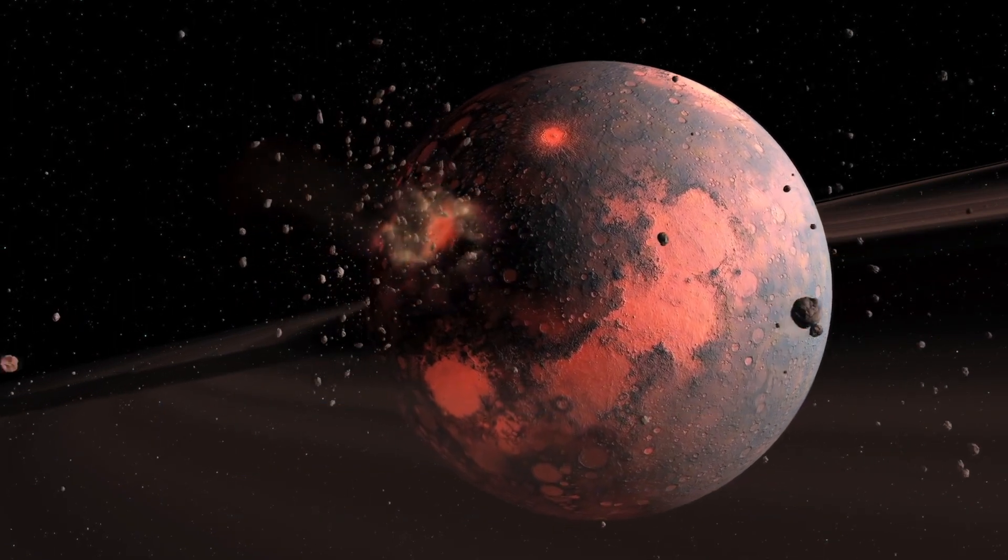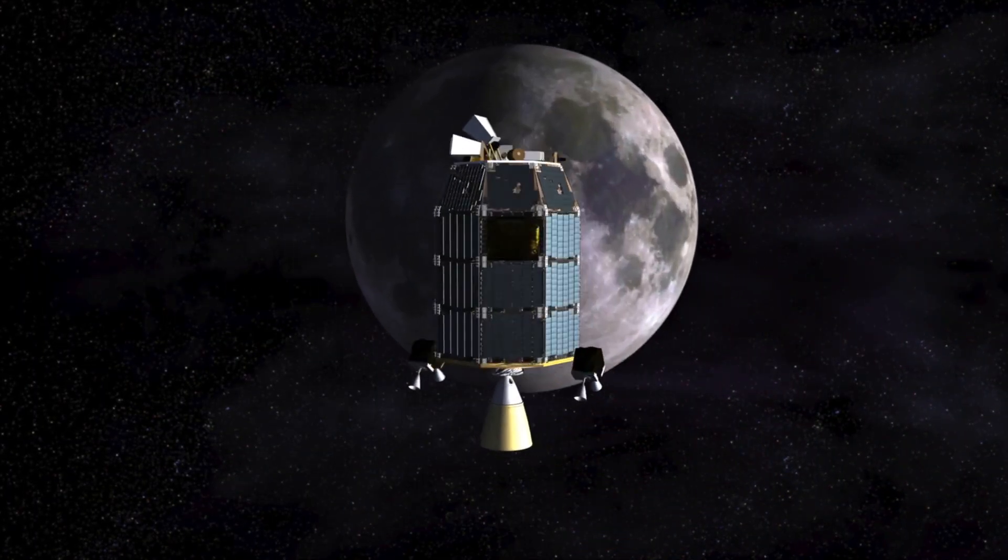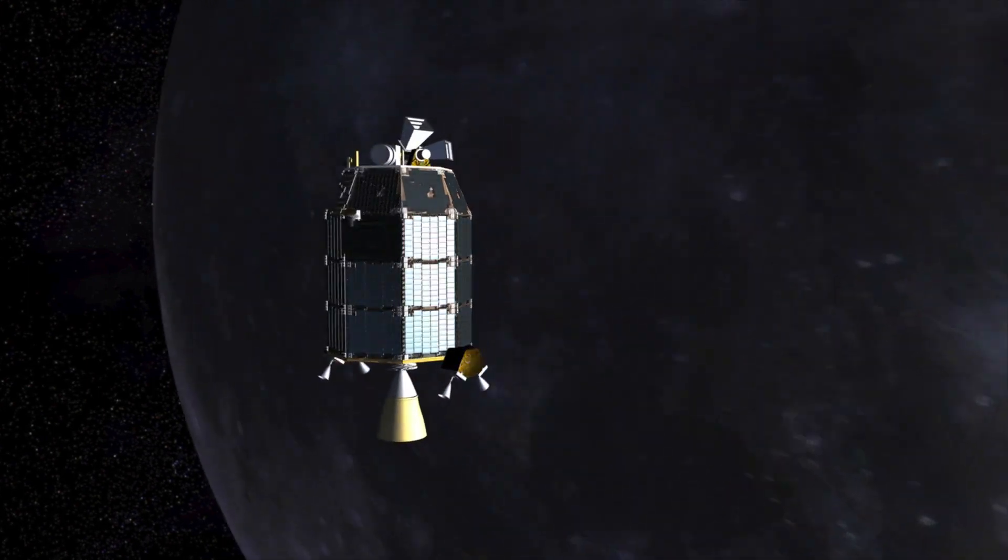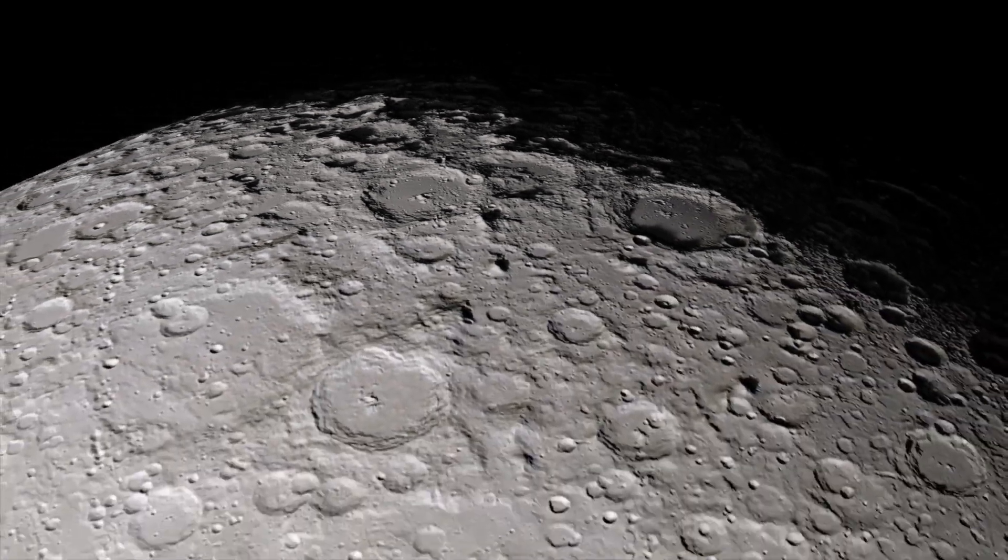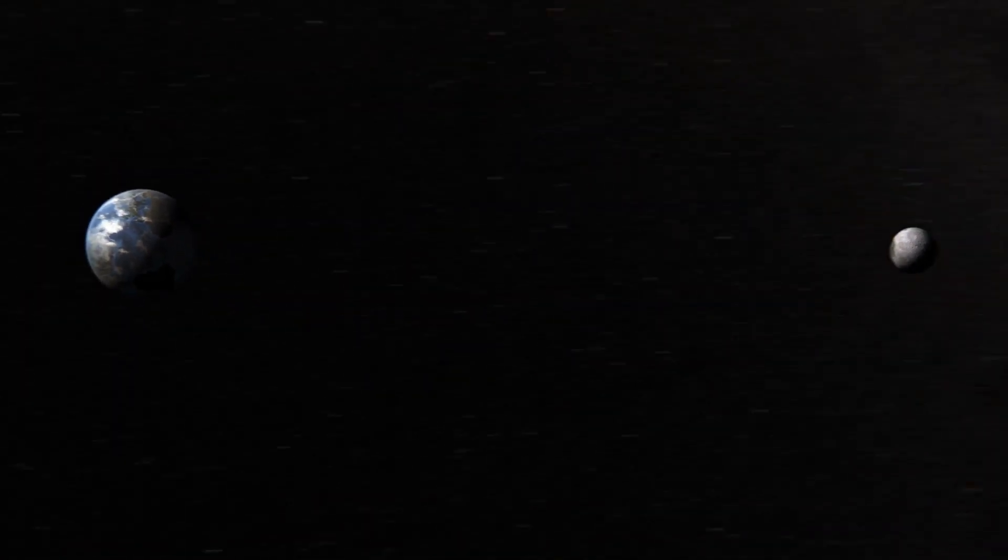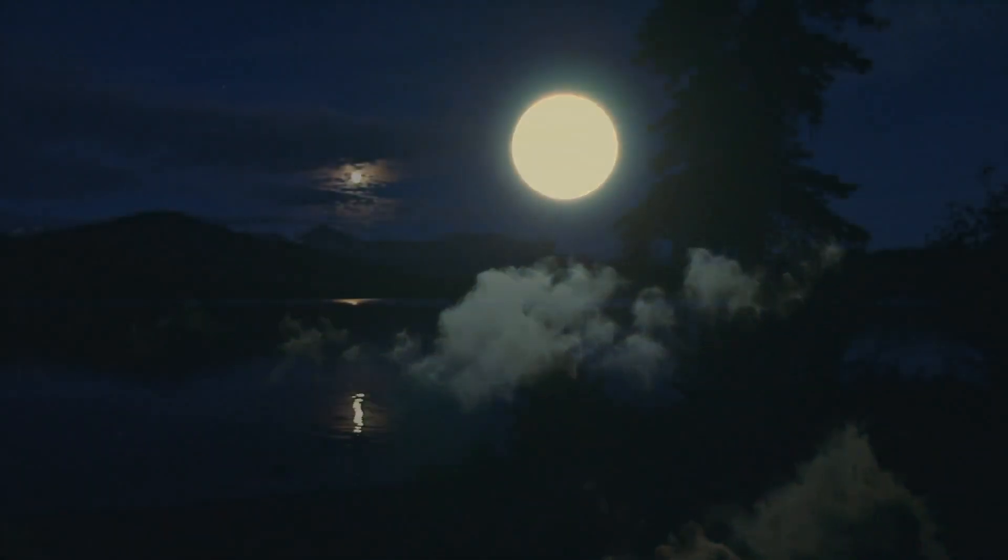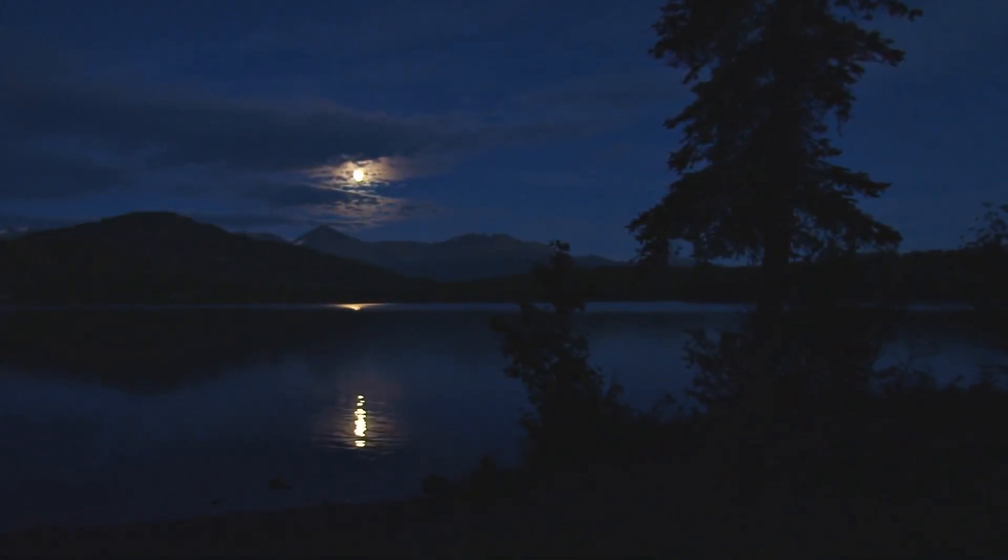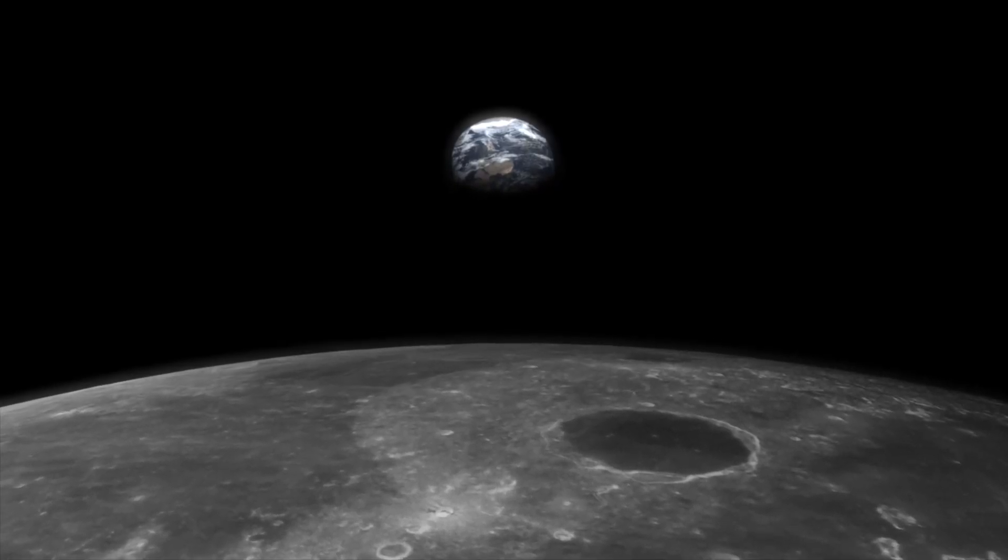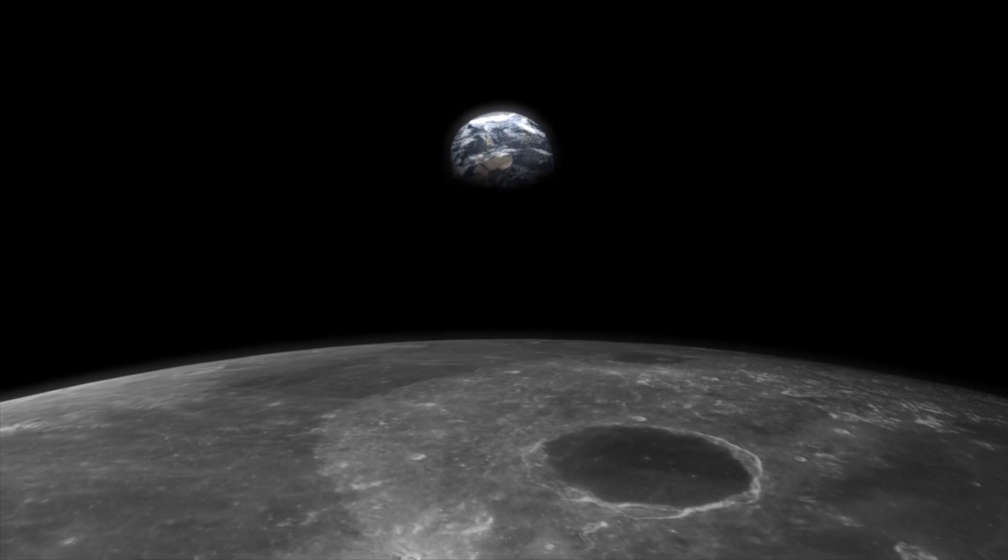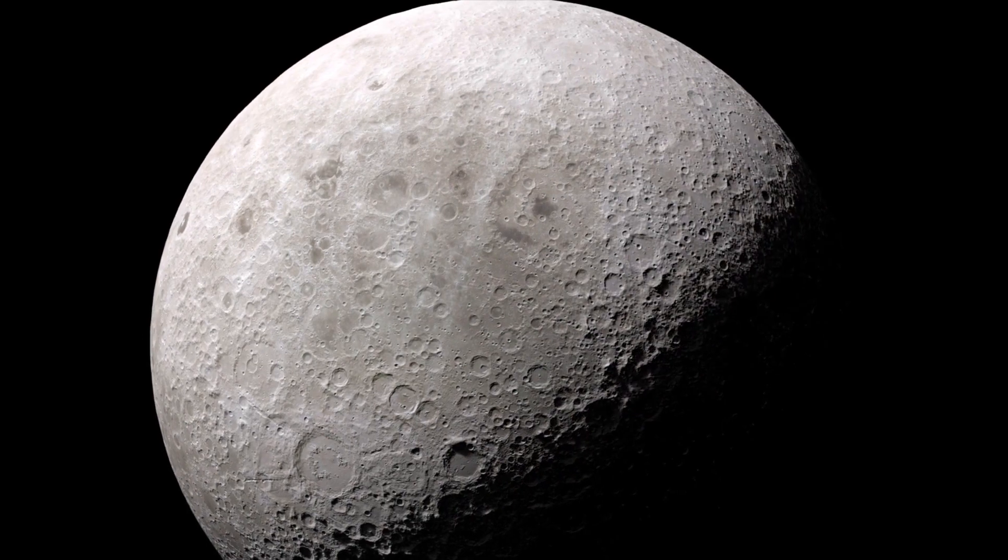But the story is not over. Space probes measure the moon slipping 3.8 centimeters further away each year. One day, the moon will break free. When that day comes, there will be no more tides. No more romantic moonlit nights. Could planetary orbits be inherently unstable? Could the chaos of planetary migration return?